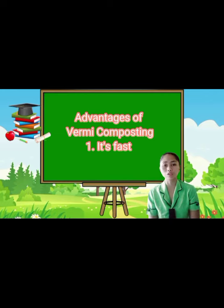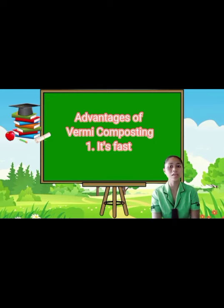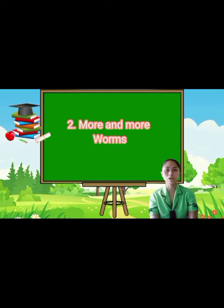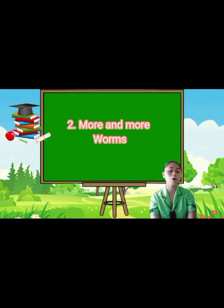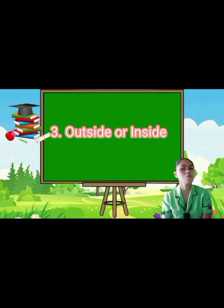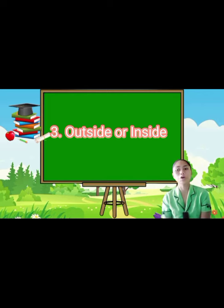Advantages of vermicomposting. First, it is fast — depending on the environment, when you compost with worms, your compost should be ready within a 2 to 3 month period. Second, more worms: once the composting cycle has completed, you will have a lot more worms. Worms, given the right growth environment, will double in population within around 90 days. Third, you can vermicompost either outside or inside. In fact, if you are an enthusiastic vermicomposter, you can place your composting bins directly underneath your kitchen sink.